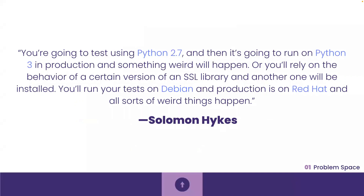To show the struggle that different environments can have on deploying software, here is a quote from the creator of Docker, Solomon Hykes: 'You're going to test using Python 2.7, and then it's going to run on Python 3 in production, and something weird will happen. Or you'll rely on the behavior of a certain version of an SSL library, and another one will be installed. You'll run your tests on Debian, and production is on Red Hat, and all sorts of weird things happen.' So clearly, to reliably deploy software across various platforms and expect consistent behavior, developers needed a way to package application code with its various dependencies.